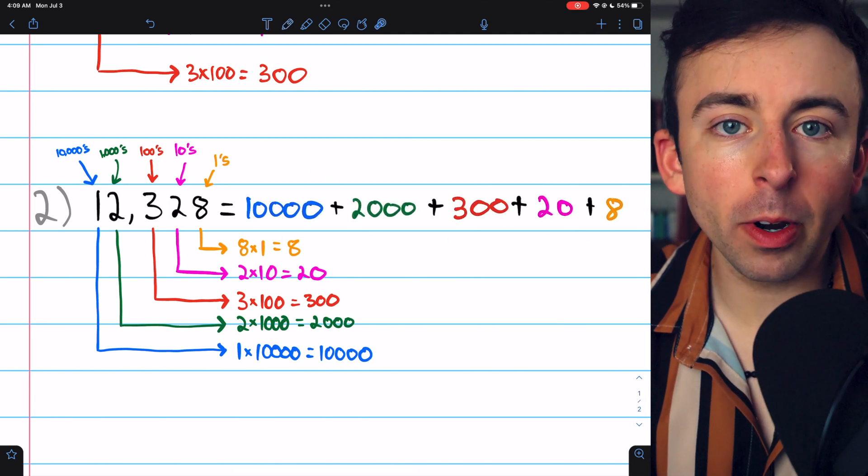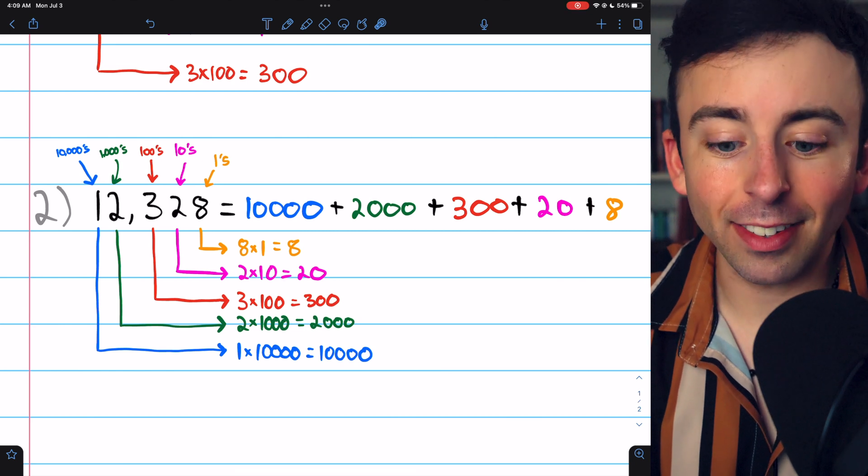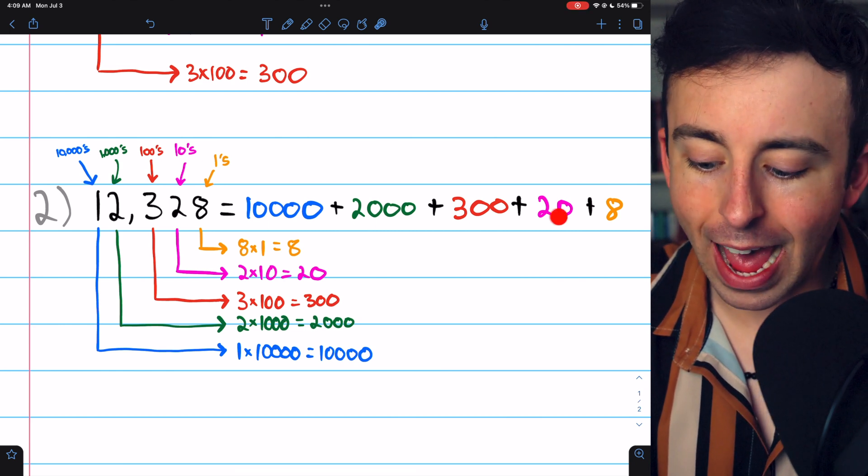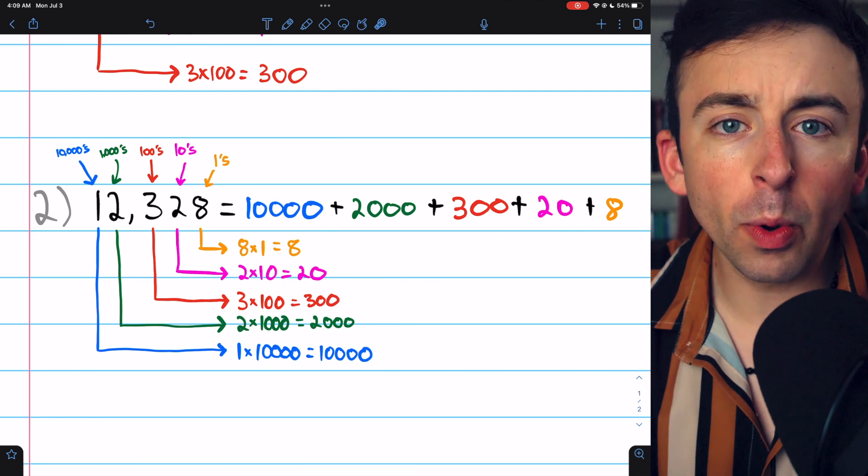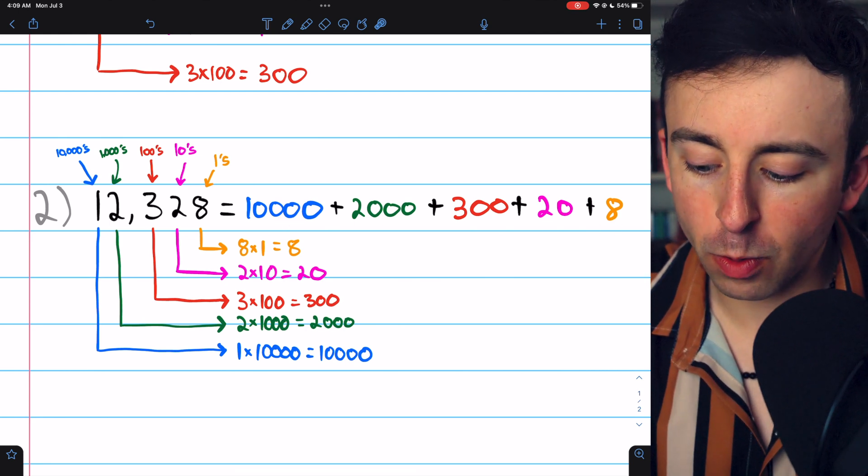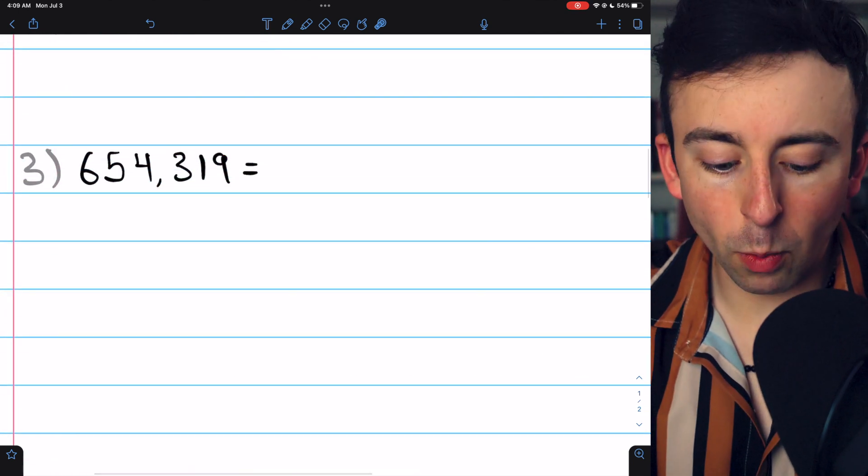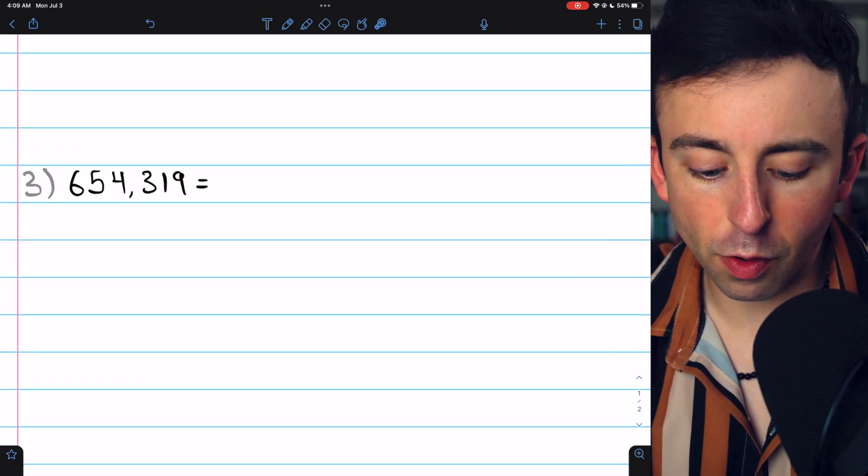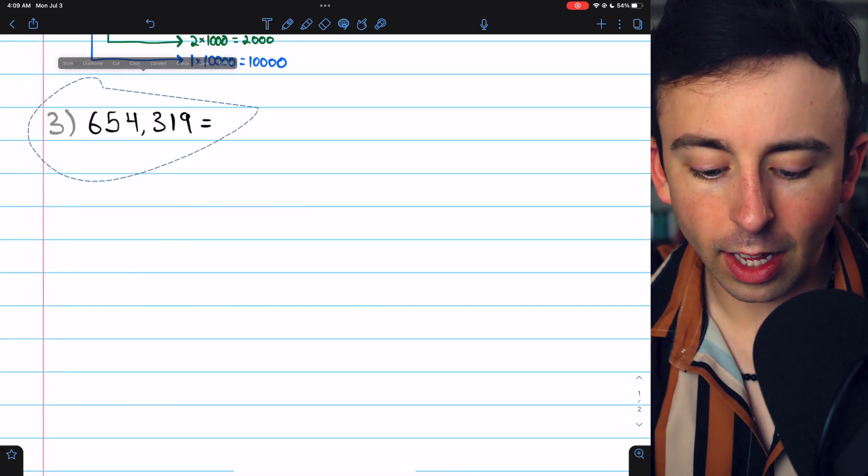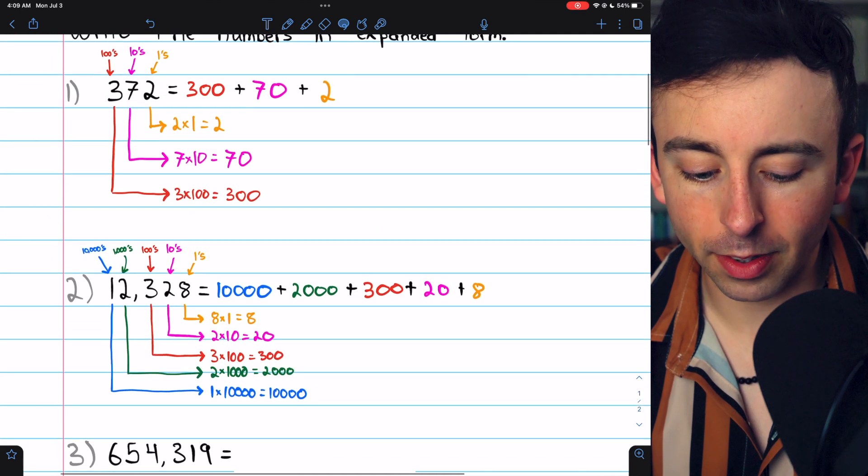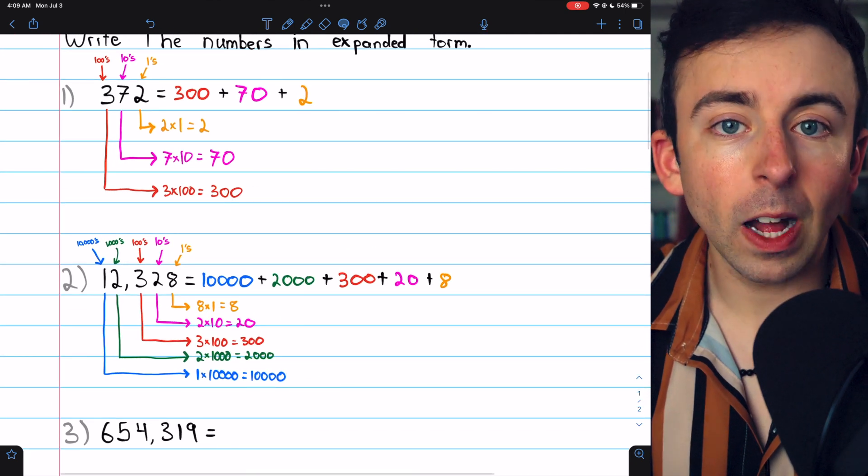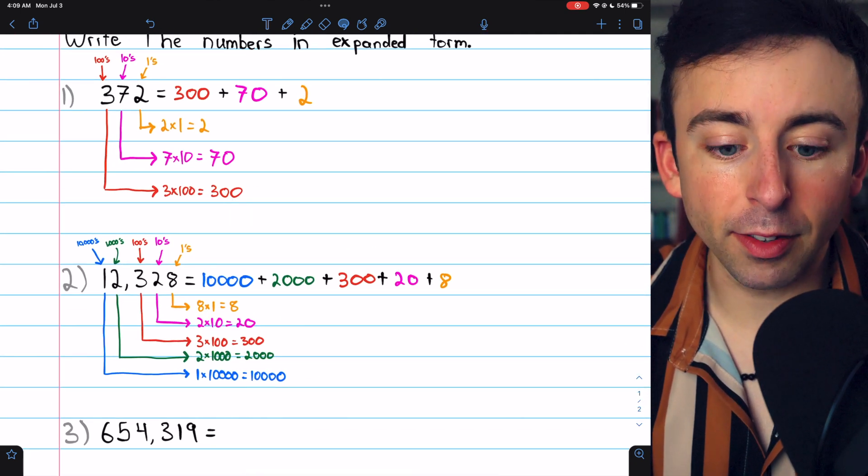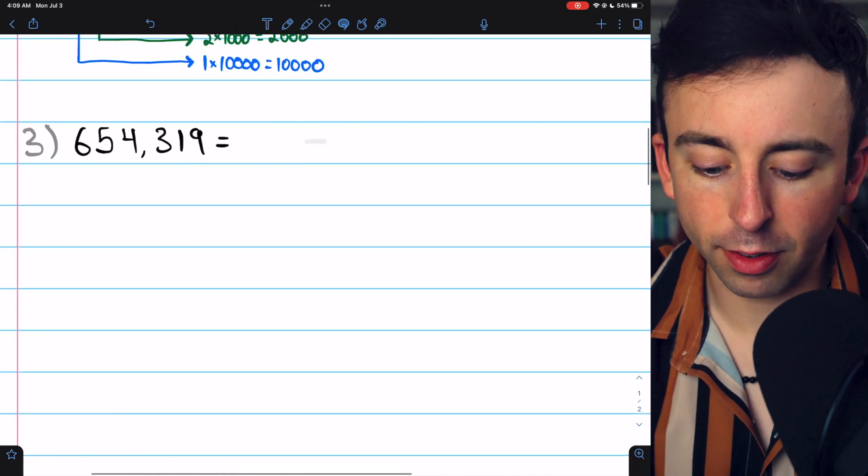Again, to write a number in expanded form, you just have to write it as a sum of what each digit actually represents. Go in order from the biggest place value to the smallest. Here's one more example for you to try, 654,319. I'll zoom out so you can see the other examples in case that's helpful. All right, hopefully you gave it a try.